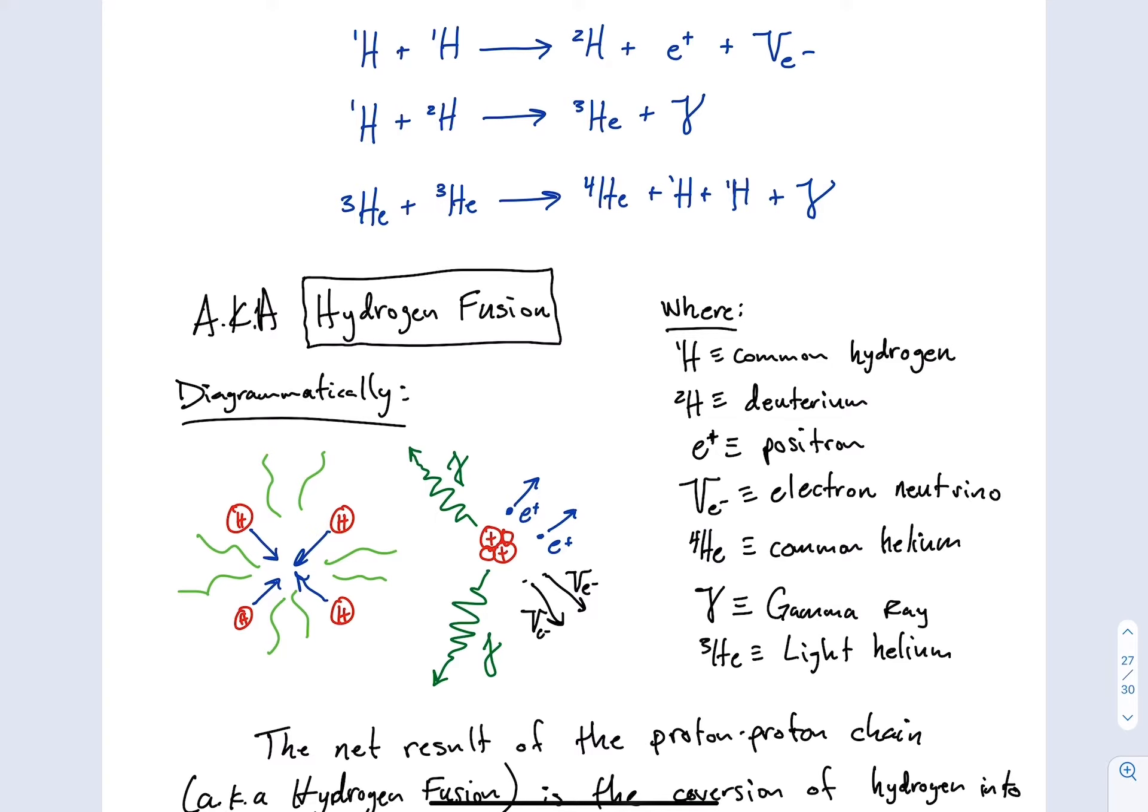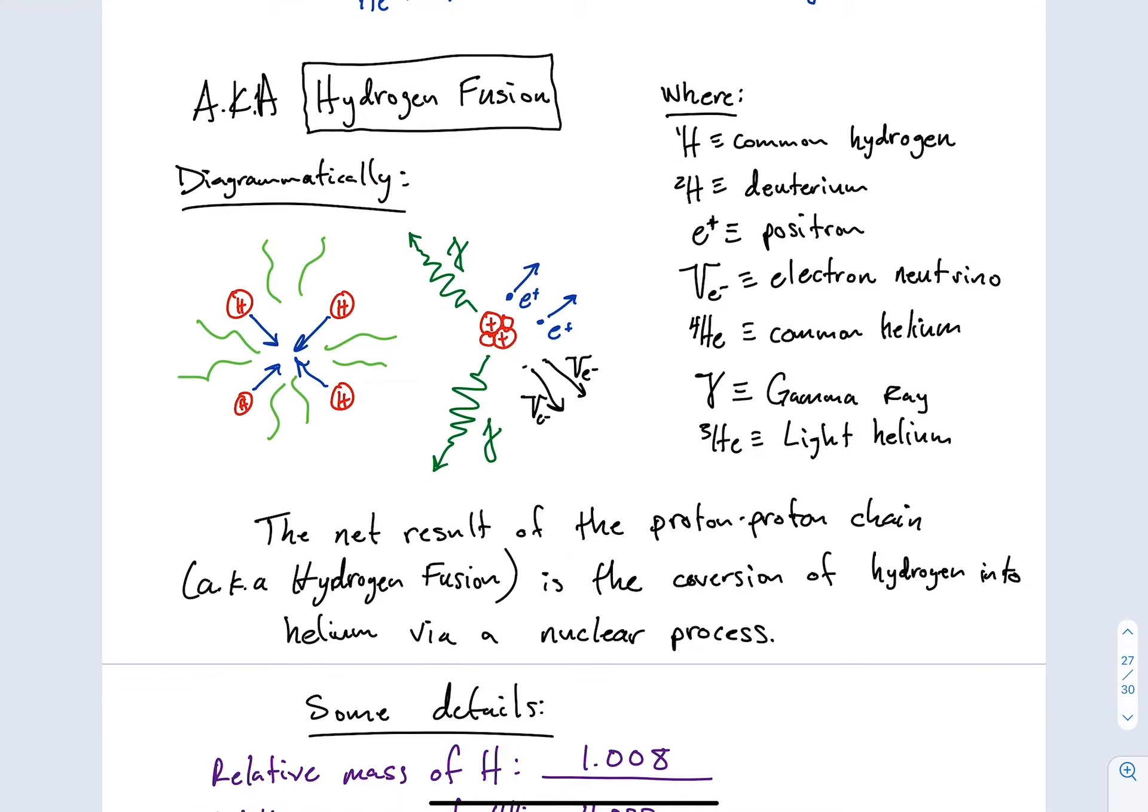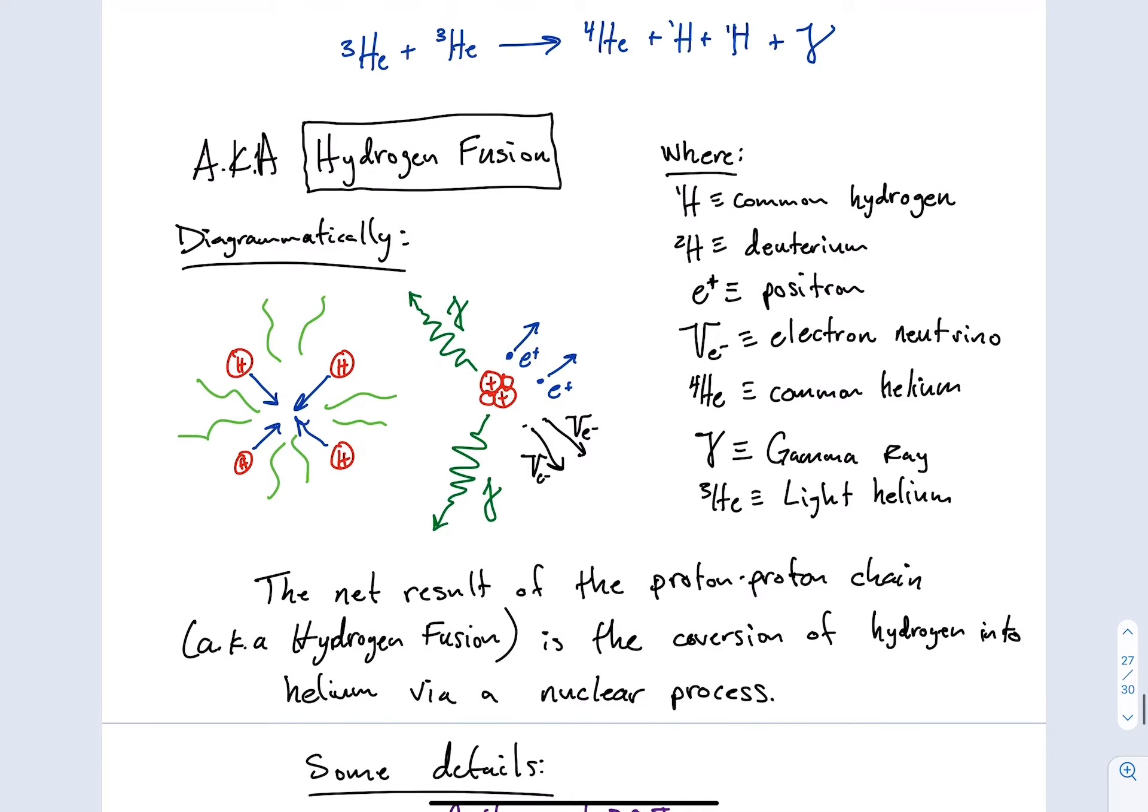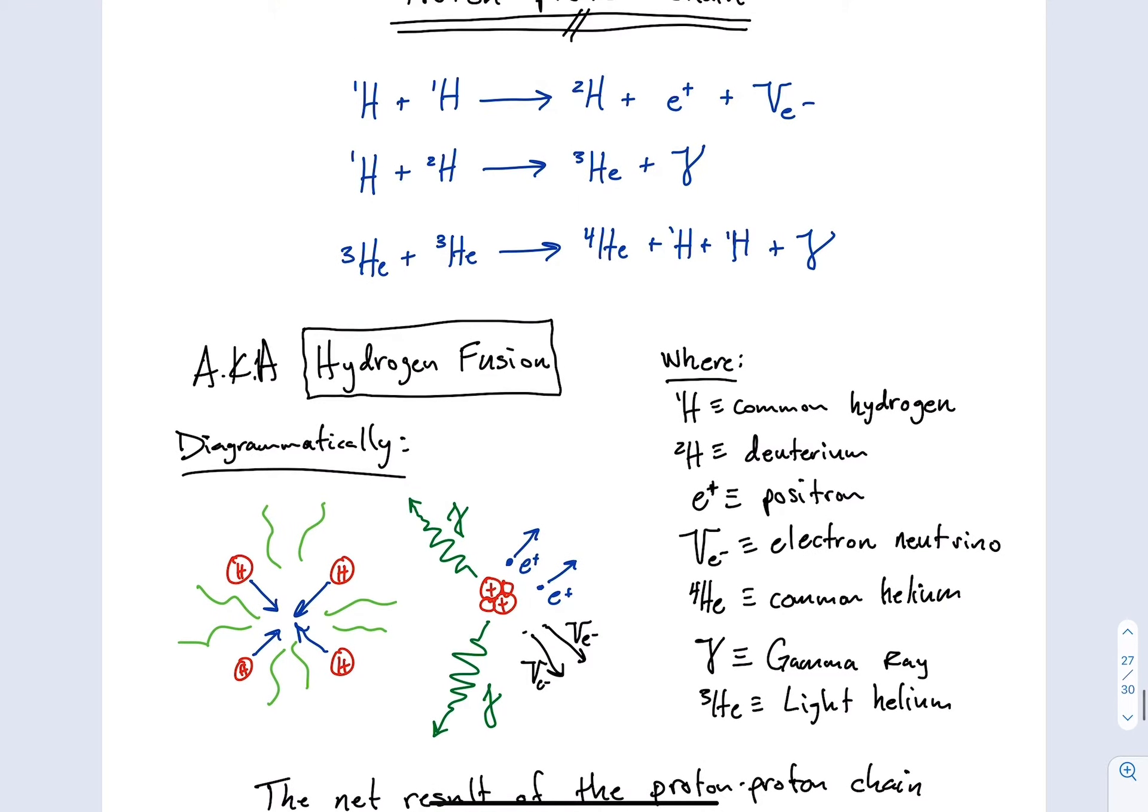Now keep in mind, this reaction will be occurring quite frequently because we have the 10 to the 54 original particles all trying to be smashed together. And you might note to yourself that the net result of the proton-proton chain, also known as hydrogen fusion, is the conversion of hydrogen into helium via a nuclear process. And that nuclear process has been sort of depicted for you both chemically and diagrammatically.